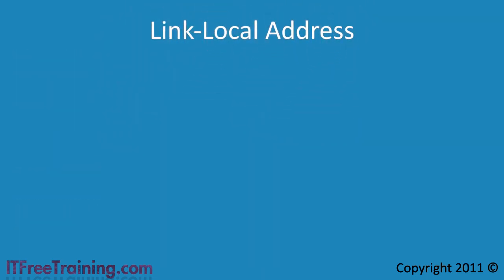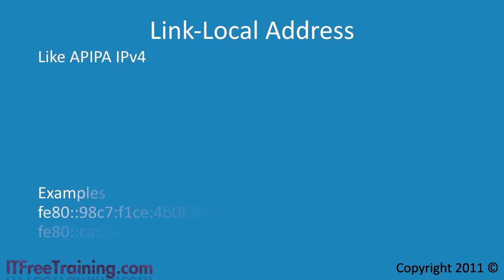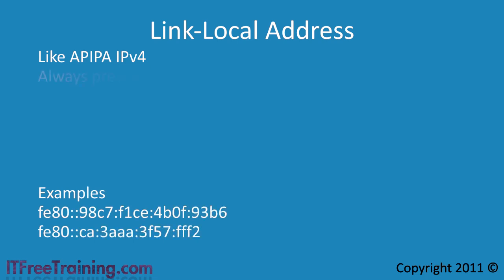Next, you have the link local address. This is similar to an APIPA address used in IP version 4. The big difference is that a link local address is always present on your network card. This is because they are used for essential services such as neighbor discovery.